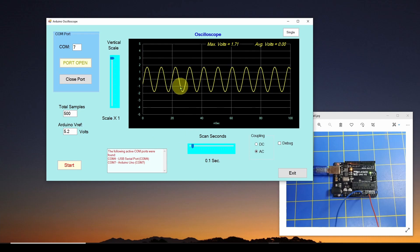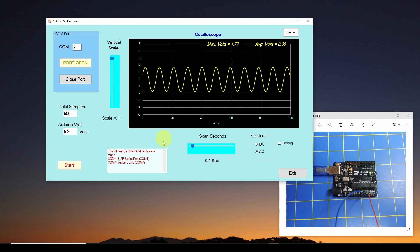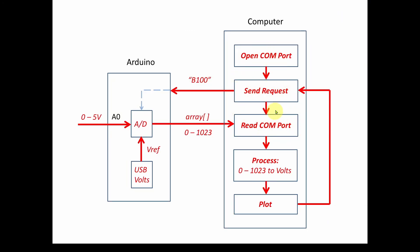Let's look at the general design from the previous videos, then go into the Arduino and start writing the sketch. Here is the block diagram — the flowchart we developed in the previous videos. We've got the Arduino and the computer. The Arduino has a very simple job: it reads 0 to 5 volts through the analog input, converts that via the ATmega328 analog-to-digital converter, and sends values from 0 to 1023 out over USB. The C# application reads that array, plots it, then does it again — refresh the oscilloscope, read more data, replot it. That's the basic cycle.